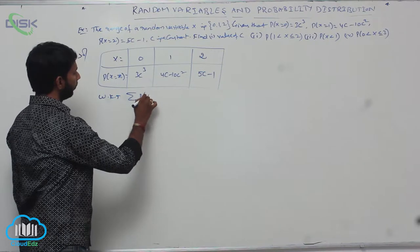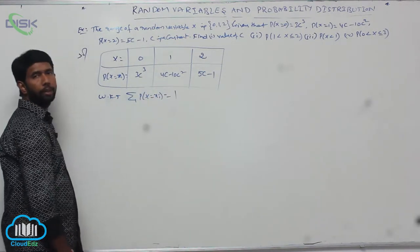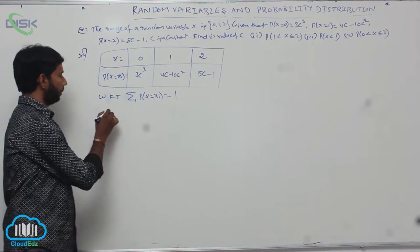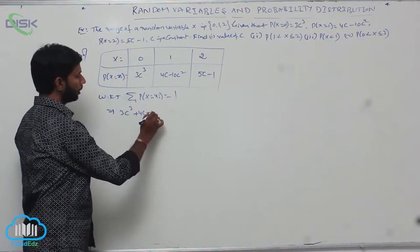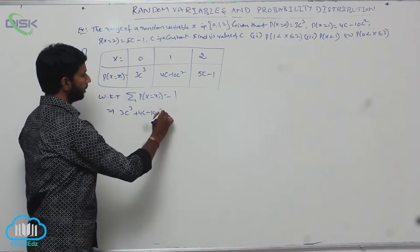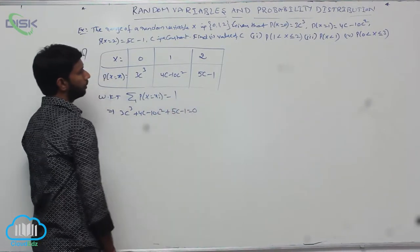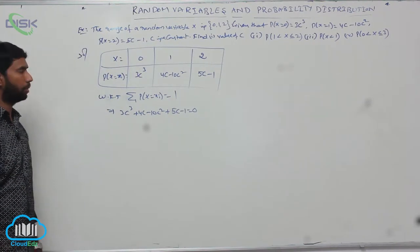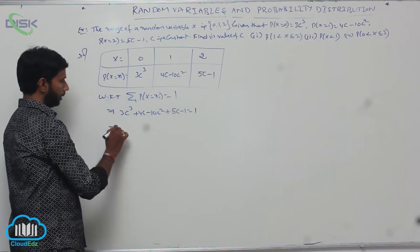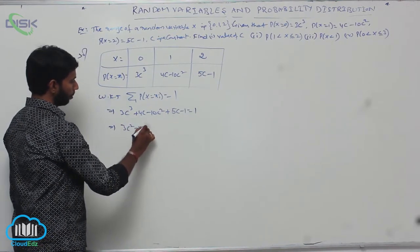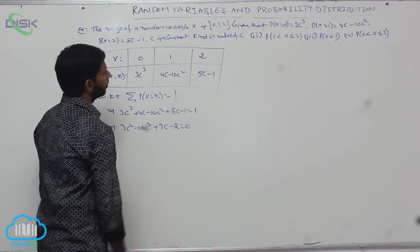Applying the condition, sigma P(X) = 3C³ + (4C − 10C²) + (5C − 1) = 1, which simplifies to 3C³ − 10C² + 9C − 2 = 0.